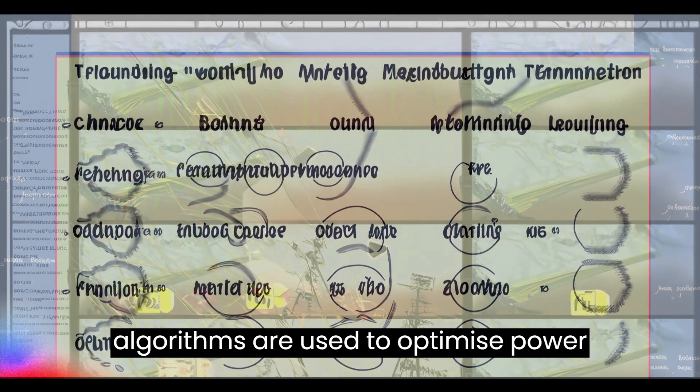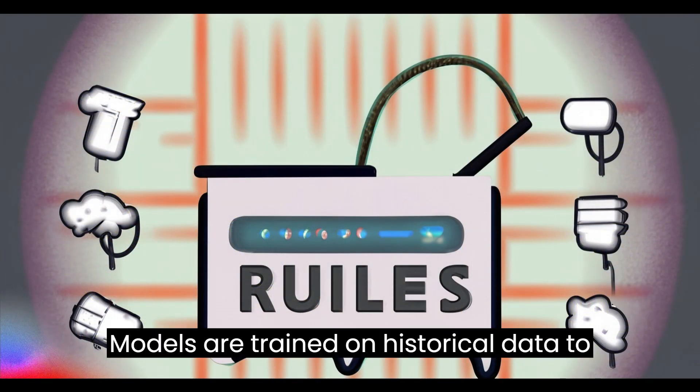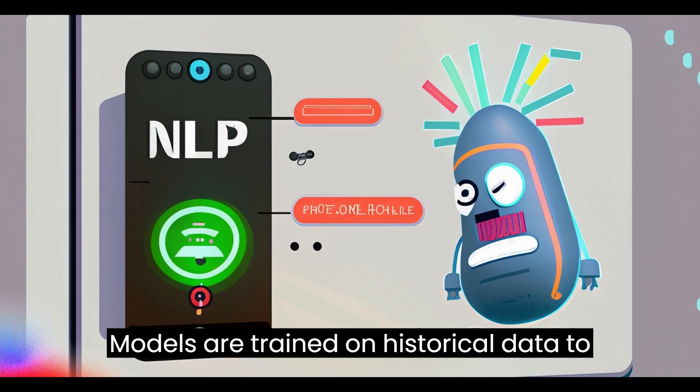Machine learning algorithms are used to optimize power generation and distribution assets. Models are trained on historical data to make predictions.